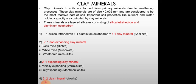Clay minerals in soils are formed from primary minerals due to weathering processes. These clay minerals are of size less than 0.002 mm and are considered to be the most reactive part of soil. Important soil properties like nutrient and water-holding capacity are controlled by clay minerals. These minerals are layered silicates consisting of silica tetrahedra and aluminum octahedra — 1 silica tetrahedron plus 1 aluminum octahedron equals a 1:1 clay mineral. Non-accessory clay minerals: black mica (biotite), white mica (muscovite), weathered mica (illite). Expanding clay minerals: partially expanding — vermiculite; fully expanding — montmorillonite. Clay mineral: chlorite.